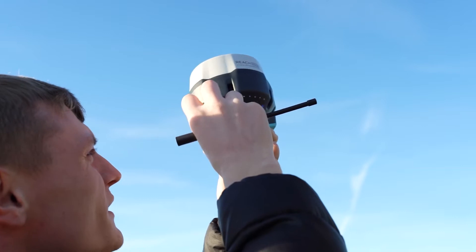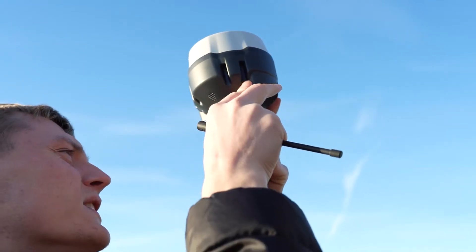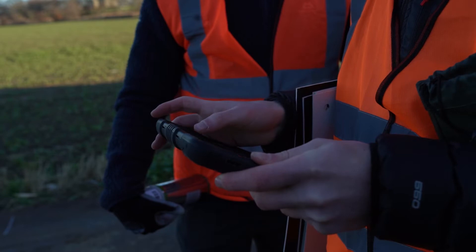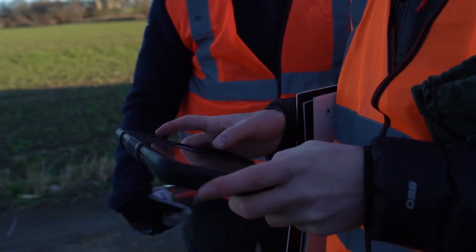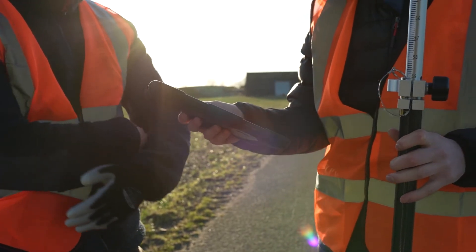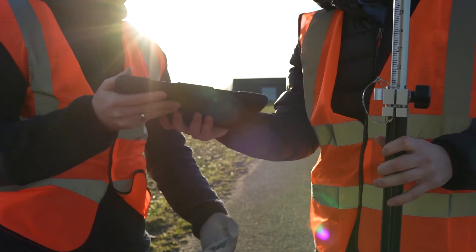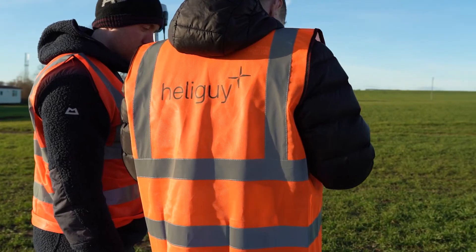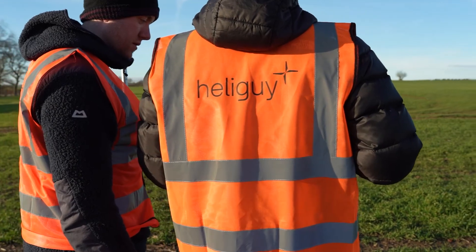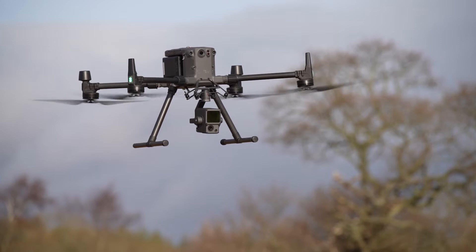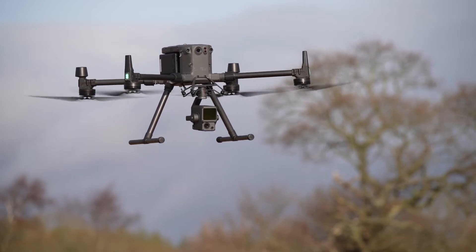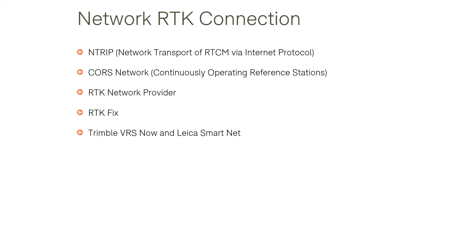Throughout this module we will introduce you to the fundamentals of GNSS RTK and explain how your corrections can be derived and applied in real time, either by establishing a connection with the DRTK2 mobile base station or from using an internet service to source your corrections. As an alternative method, we will also demonstrate how to post-process GNSS corrections using a post-processing workflow if you don't have access to the internet or a DRTK2 when out in the field. Firstly, let's look at a workflow for obtaining positional corrections using an RTK network connection through the internet using NTRIP protocol.